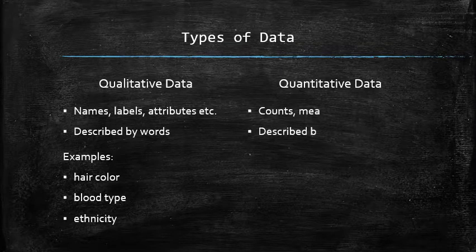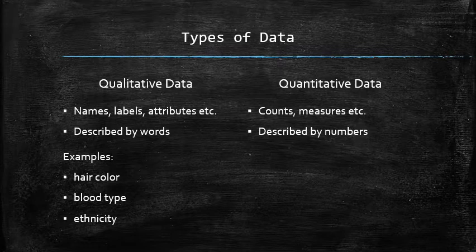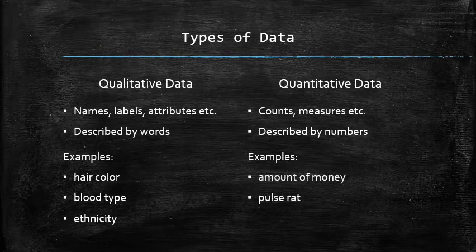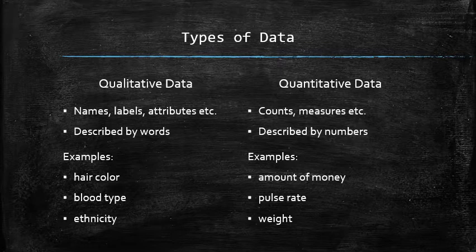Quantitative data consists of numbers that are the result of counting or measuring attributes of a population such as the amount of money, pass rate, weight, number of people living in your town, or number of students who take a course.